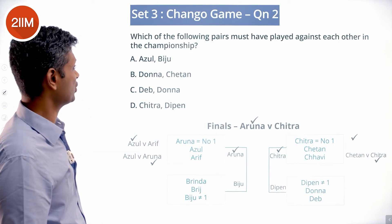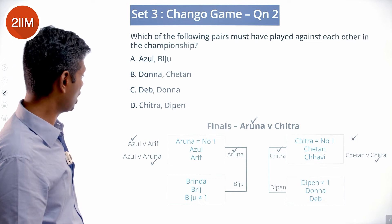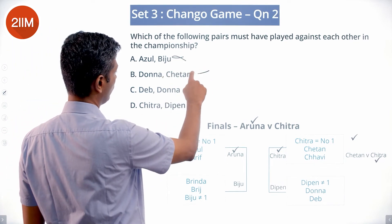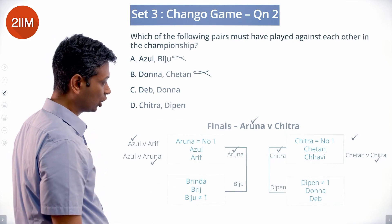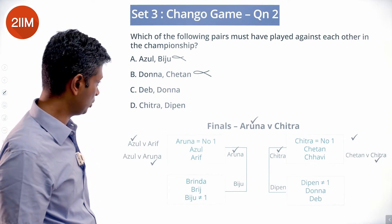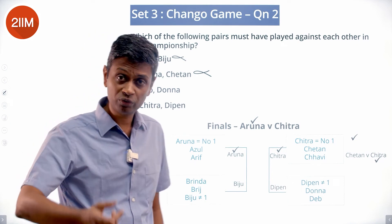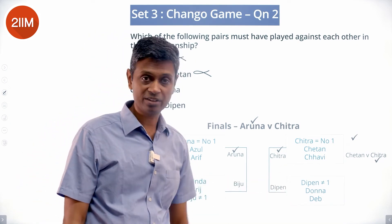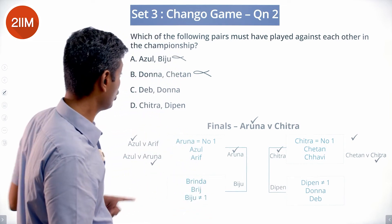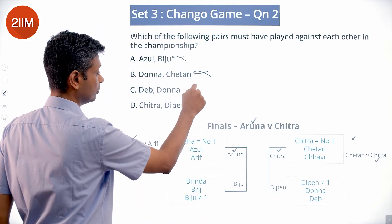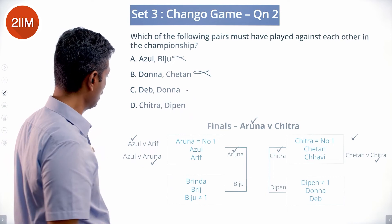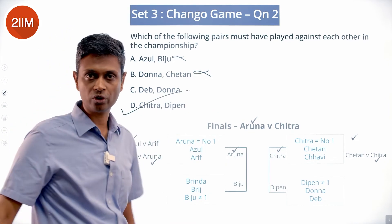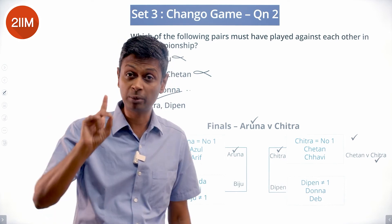For the question 'which pair must have played against each other?' — Azul and Biju: no, Azul didn't qualify. Donna and Chetan: no, Donna didn't qualify. Deb and Donna: Dipen was not number one, so one of them was — Dipen could have played Donna first, then Deb, so Donna vs Deb need not have happened. But Chitra vs Dipen definitely happened — that was one semi-final. The answer is Chitra and Dipen.